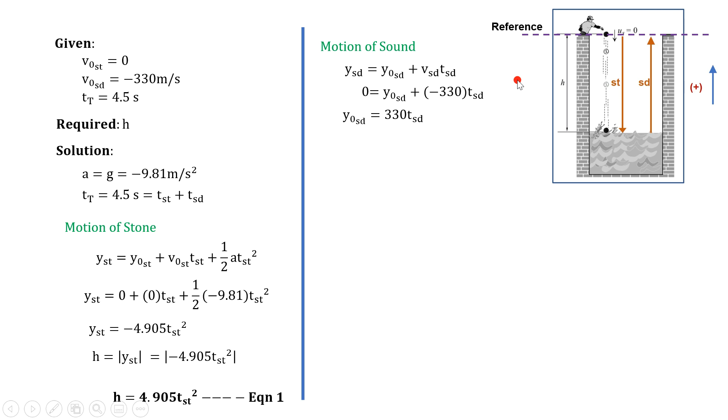Observe that for this motion, we are going to use the initial position of the sound since this describes or measures the depth h. So when you get the magnitude of the initial position of the sound, then you can get the magnitude as well of depth h. Next, we express h as the absolute value of its initial position, which is the absolute value of 330 times t_sd, giving us the second equation for h.